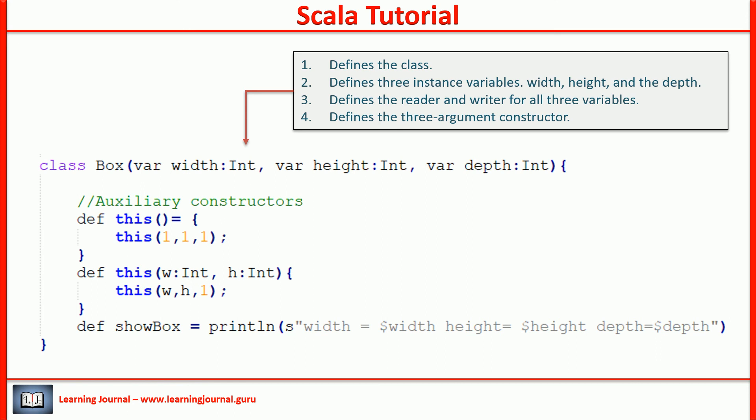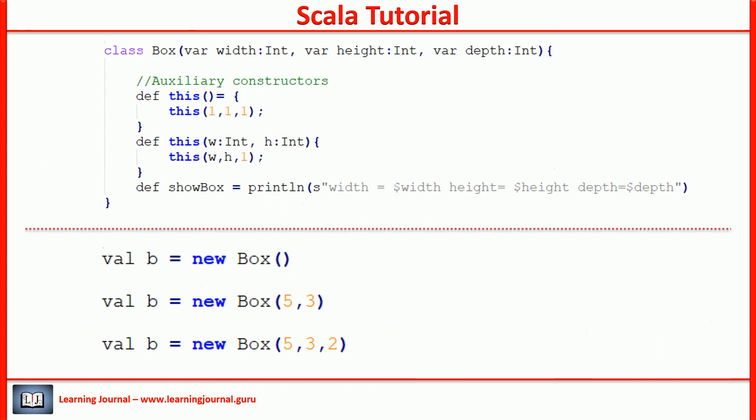The last line is to display all the three values. I kept it there for testing my code. Now you can instantiate the box class with no arguments, two arguments, or three arguments. Great! That's all about Scala constructors. In the next session, I will talk about some other Scala object oriented concepts. Thank you for watching Learning Journal. Keep learning and keep growing.